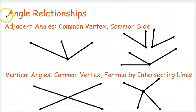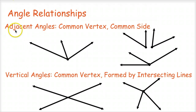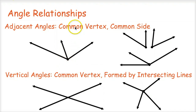The first scenario we're going to talk about are adjacent angles. Adjacent — another word for that is basically next to. When you think about adjacent angles, you're thinking about two angles that are next to each other. So they have a common vertex and a common side.